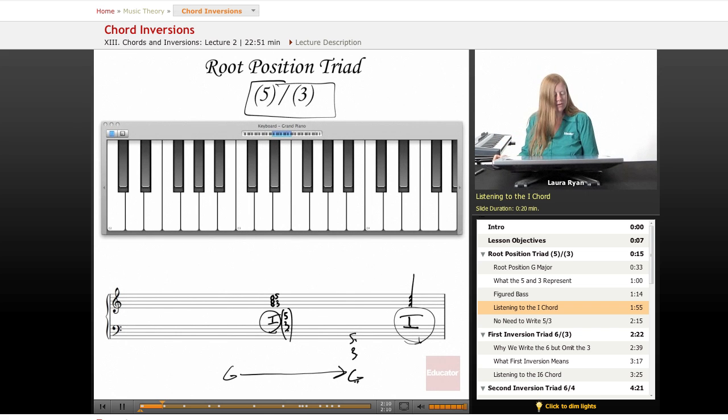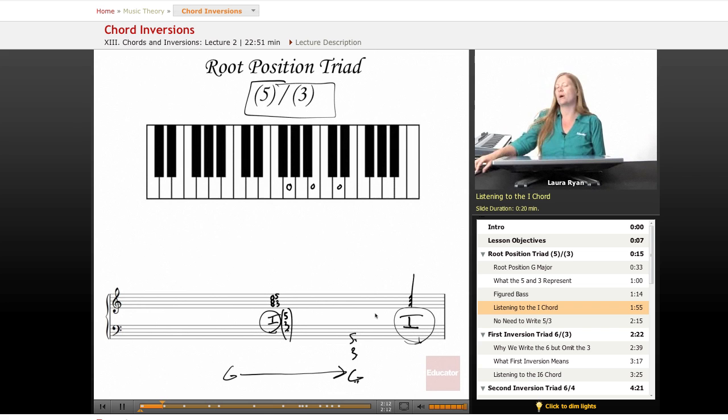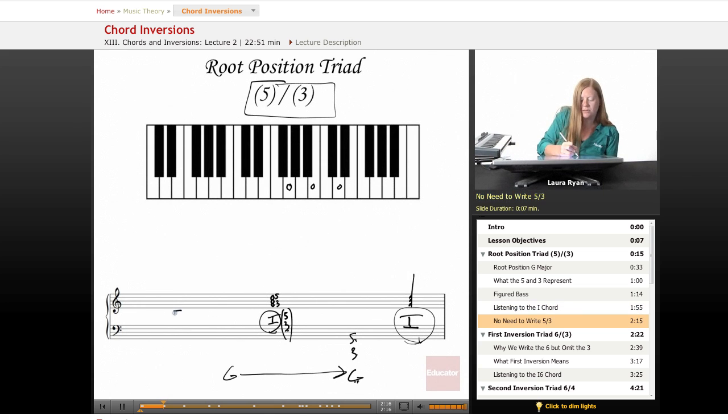We sometimes write the five, three to illustrate this point when we're learning about inversions, but generally if you see, so we'll write a lower G, G, B, D, this is one. You don't need to write five, three.